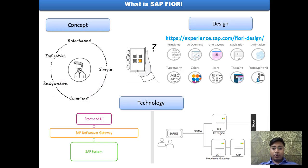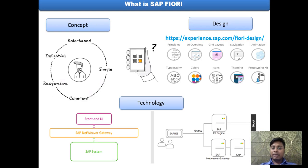Now, we will go into some more details of SAP Fiori. You can ask, what is SAP Fiori? The easiest way to explain is with three dimensions: one is the concept dimension, second one is the design dimension, and third one is the technology dimension.